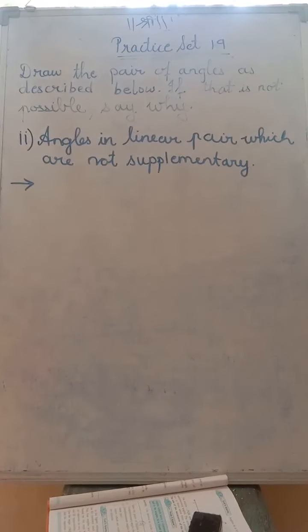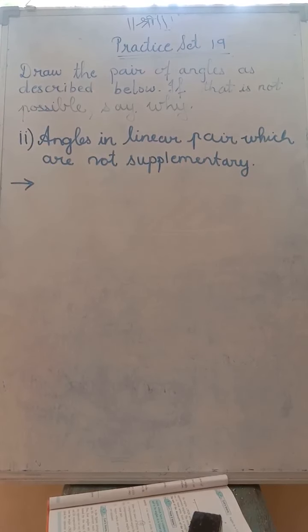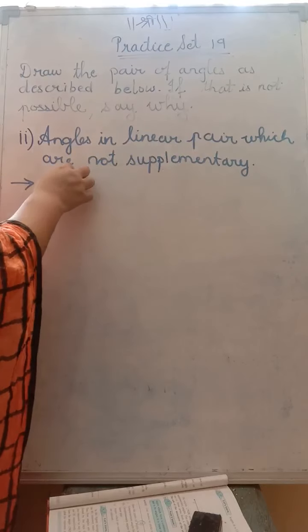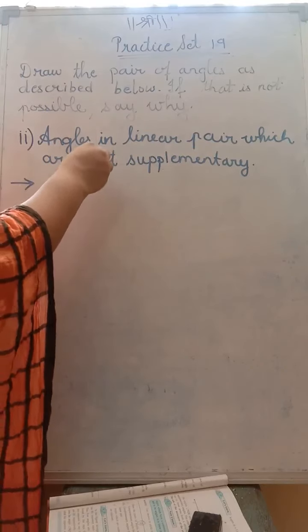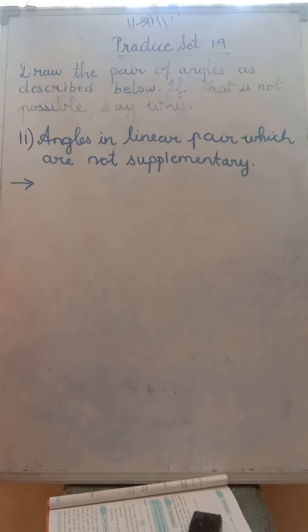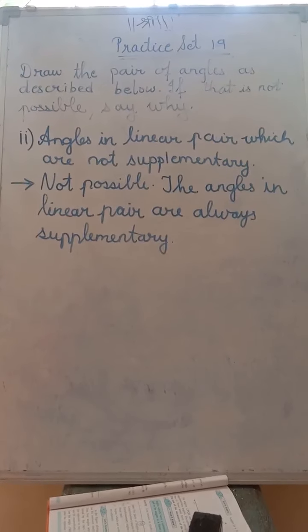Second question: angles in linear pair which are not supplementary. We have learnt that angles in linear pair are supplementary. So drawing a linear pair that is not supplementary — is it possible? No, it is not possible. Why? Because angles in linear pair are always supplementary. You have to write that reason as the answer for the second question.